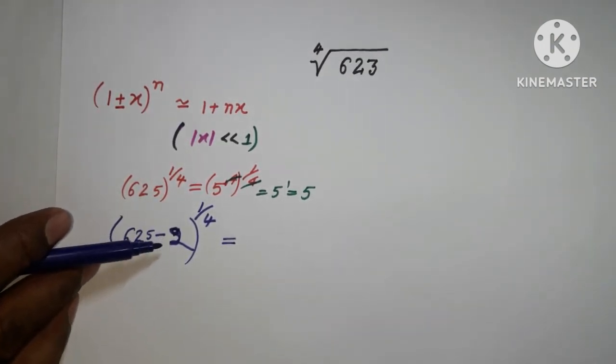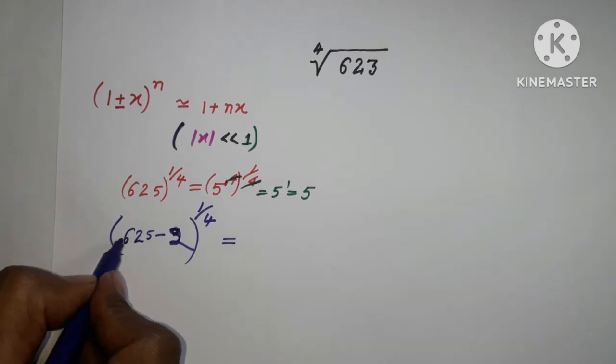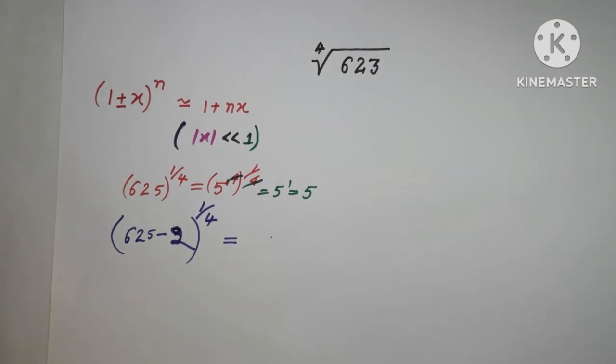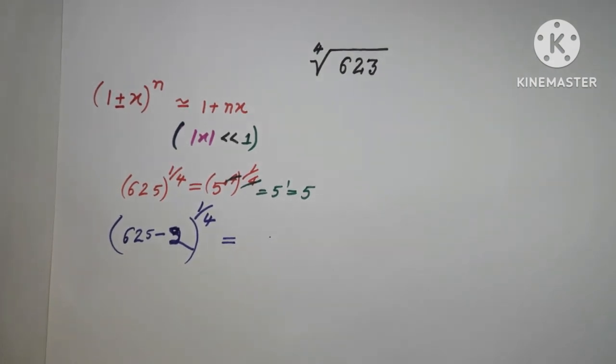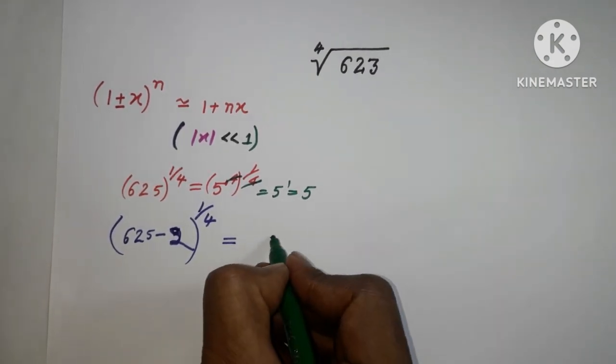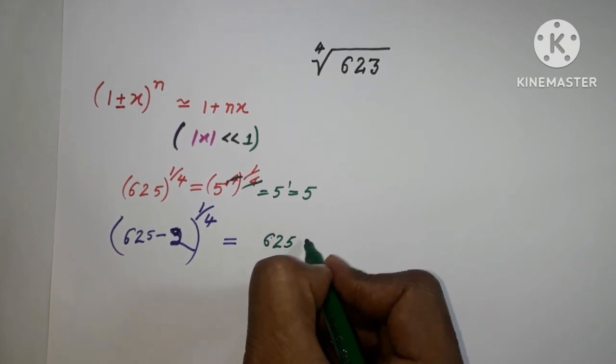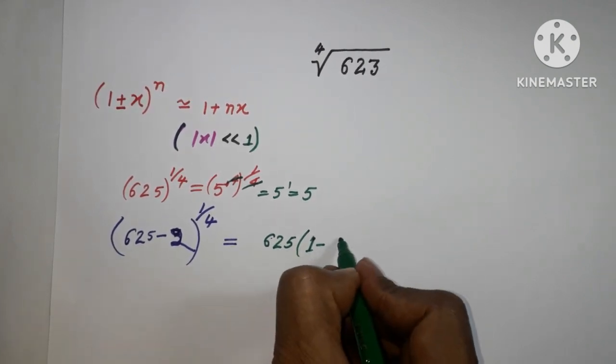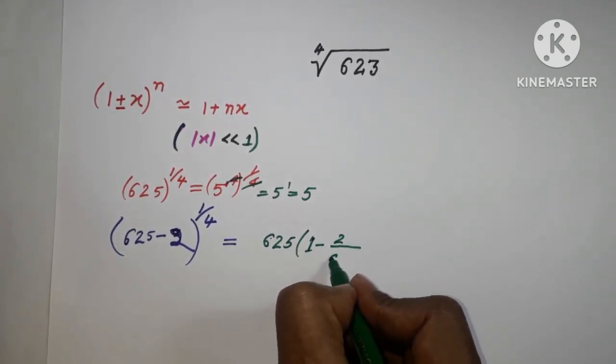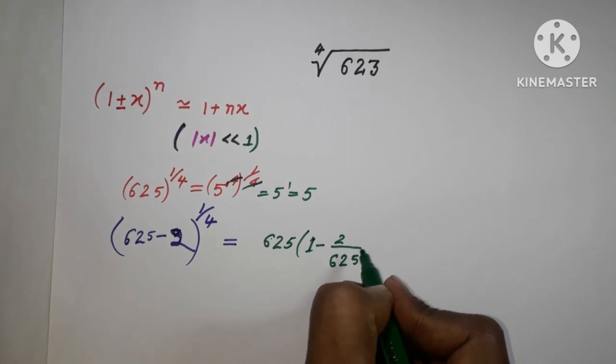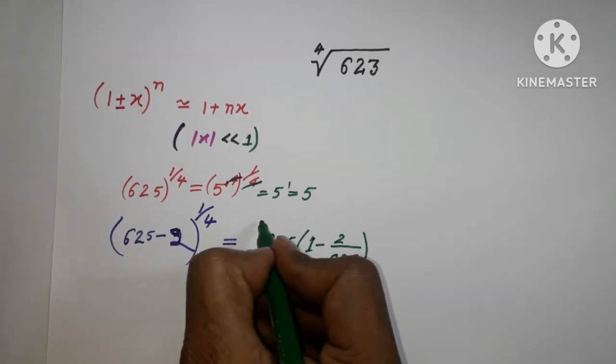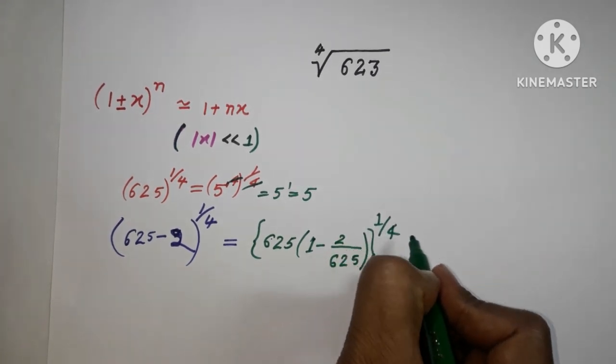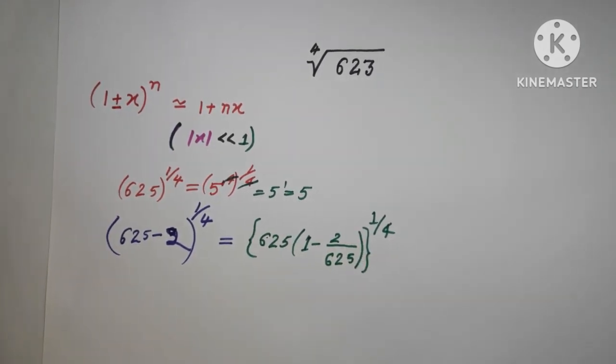How? I'm just going to take 625 common from here. So it becomes 625 raised to 1/4, times (1 - 2/625) raised to the power 1/4.